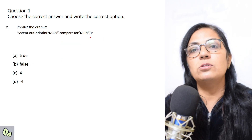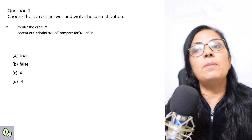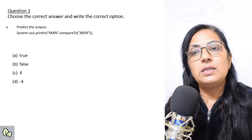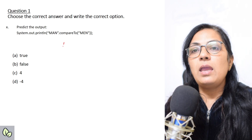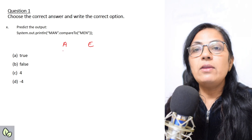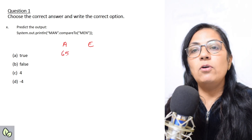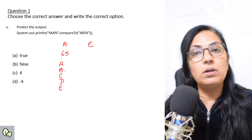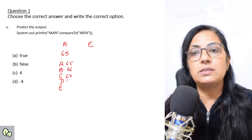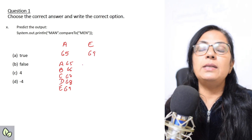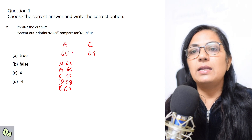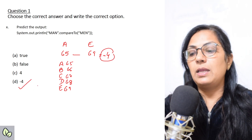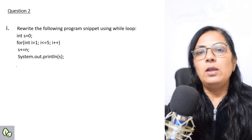Next: predict the output of System.out.println("man".compareTo("men")). The compareTo function returns an int. 'm' and 'm' are the same, then 'a' vs 'e'. The ASCII value of 'A' is 65, and counting: A=65, B=66, C=67, D=68, E=69. So 'A' minus 'E' = 65 - 69 = -4. The correct answer is -4.